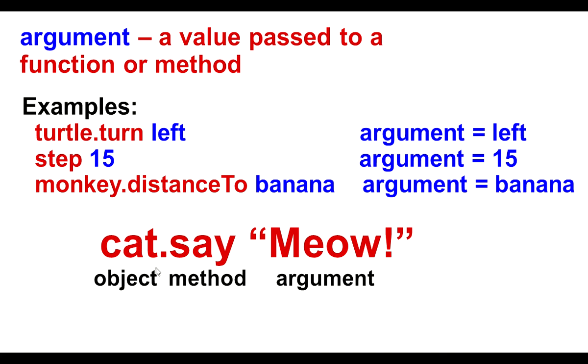Here cat dot say object dot method and meow is the argument being passed to the say method. Meow is describing exactly what the cat is saying. So that's why it's an argument. It's being passed to the say method.